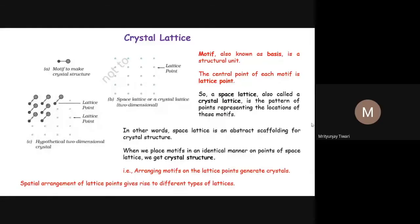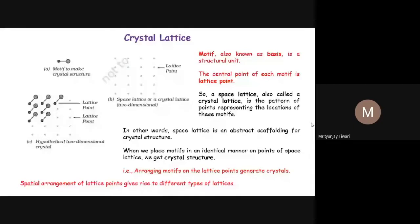In the last class, we studied the differences between amorphous and crystalline solids, and also different kinds of crystalline solids. We studied covalent, ionic, molecular, and metallic types. These solids depend on the inter-particle interactions. If the interaction is covalent like in diamond or silica, it is called a covalent solid. If it is an ionic bond, we call it an ionic solid. If the interactions are weak non-covalent interactions, we call them molecular solids. If the interaction is metallic, we call them metallic solids.